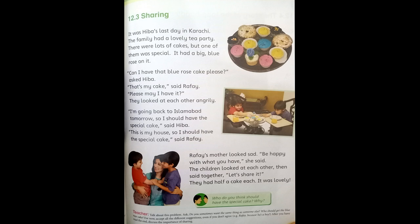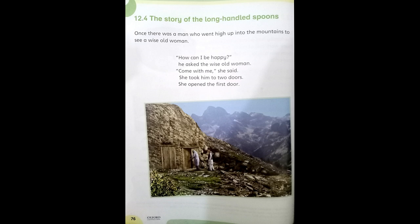Now come to page number 76: 'The Story of the Long-Handled Spoons.' This is a story about sharing and how we can enjoy our lives by sharing food with others. We start reading: Once there was a man who went high up into the mountains to see a wise old woman. 'How can I be happy?' he asked. 'Come with me,' she said, and took him to two doors.